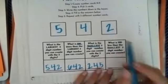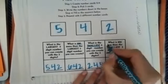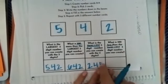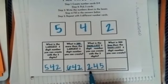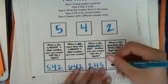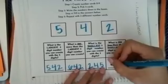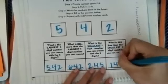Now I move on to my last question. What is 100 less than the smallest three-digit number? Well, I know that my smallest three-digit number is 245. So I have to think, what is 100 less than 245? I know that I'm thinking of my hundreds place. I know that it's 145.